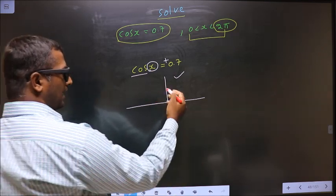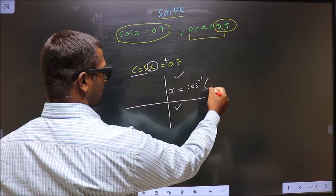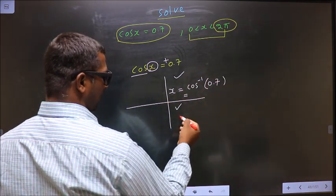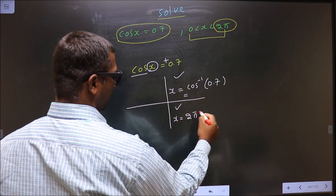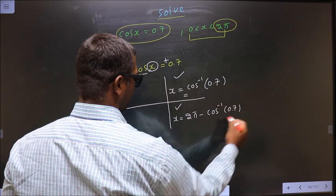To get an angle in the first quadrant, we do cos inverse 0.7. To get an angle in the fourth quadrant, we do 2π minus cos inverse 0.7.